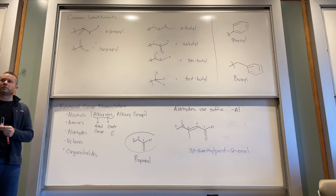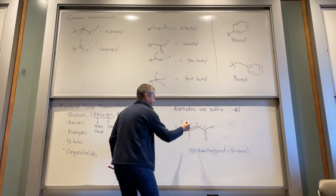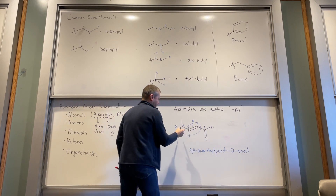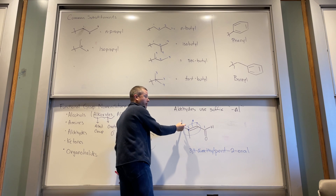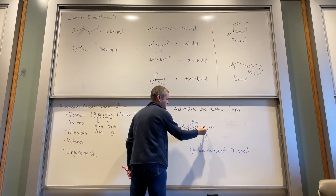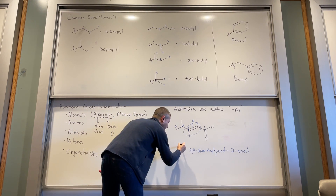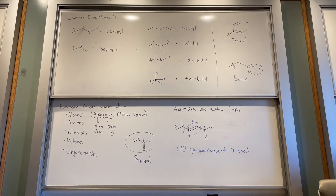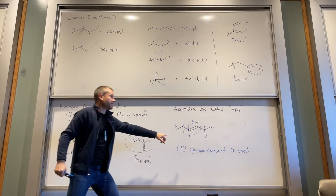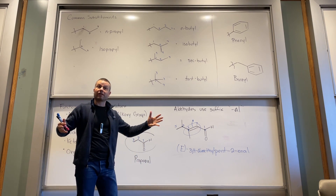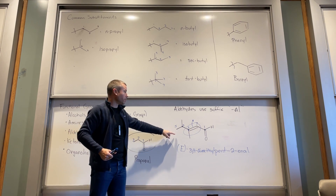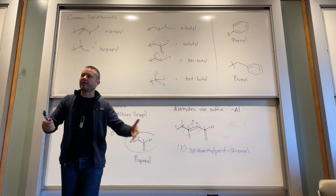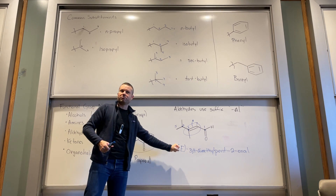We also have to identify the geometry. Looking at carbon three, carbon four is the higher-priority atom; at carbon two, carbon one is the higher-priority atom, so this is the E isomer. There's only one double bond, so we don't need to specify 2E — we can just write E, because it's understood that it refers to that one double bond. A very common mistake is naming all the substituents and functional groups and getting the numbers right but then forgetting about the geometry. So don't forget about the geometry.